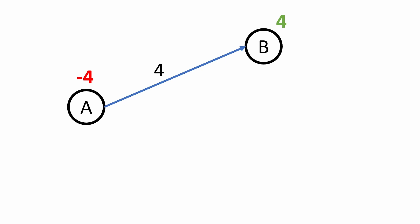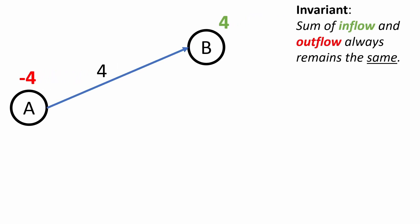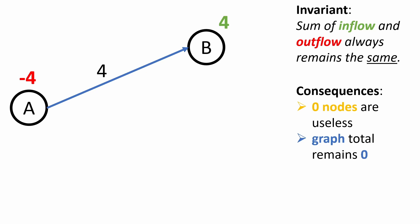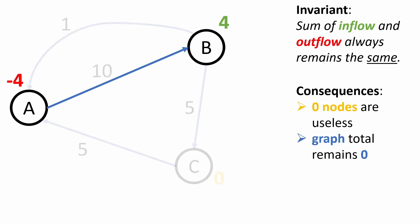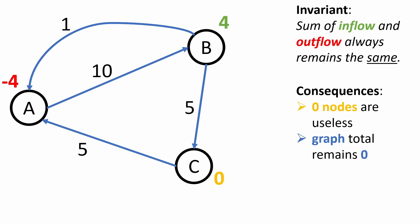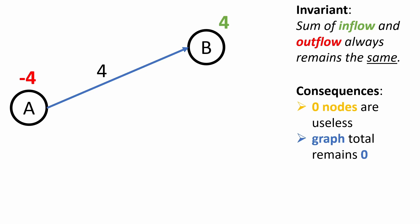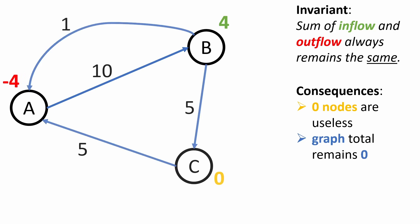We've found an interesting invariant: the sum of inflow and outflow values for any given node always remains the same even as we change transactions. Two useful consequences: zero-score nodes are essentially useless and can be removed without affecting the graph, and the graph total always remains zero. These two properties can serve as sanity checks.